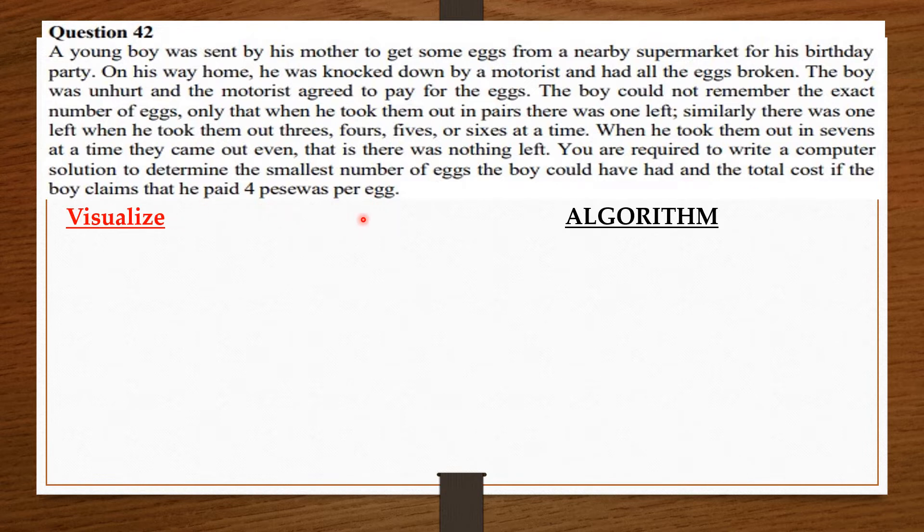Let's visualize. So, what we have here is that when the boy took the eggs out in 2s, 3s, 4s, 5s and 6s, there was always a remainder of 1. But then when he took them out in 7s, they came out even, meaning that the total number of eggs is completely divisible by 7 since they came out even when they took them out in 7s.